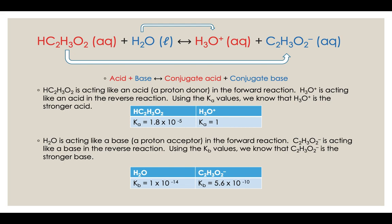Water is acting like a base in this problem as well — a proton acceptor — turning into H3O+, so H3O+ is the conjugate acid of water. When you look at the Ka values for acetic acid versus H3O+, the H3O+ Ka value is much larger than the Ka value for acetic acid. When you compare Kb values for water and the acetate ion, the acetate ion is the stronger base — it has a bigger Kb value than water does.